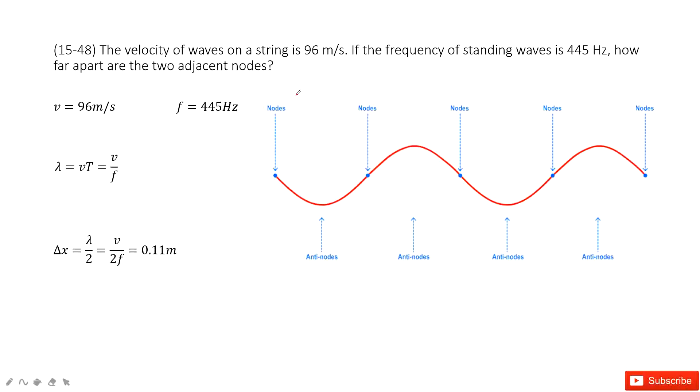You can see we have a wave and the speed, the velocity of the wave is given there. Frequency of the wave is there. I ask you to find how far apart are two continued nodes.